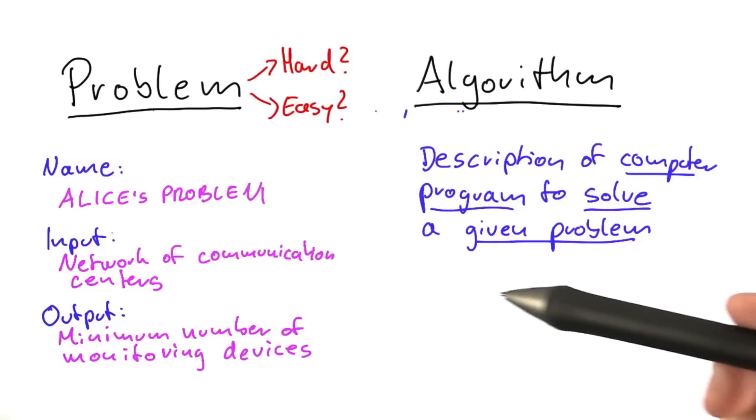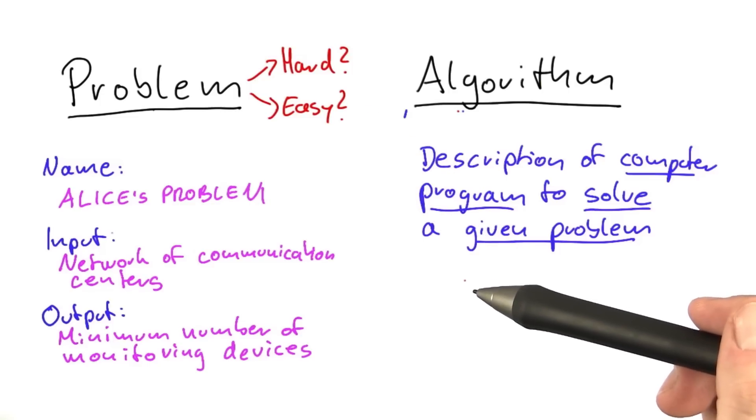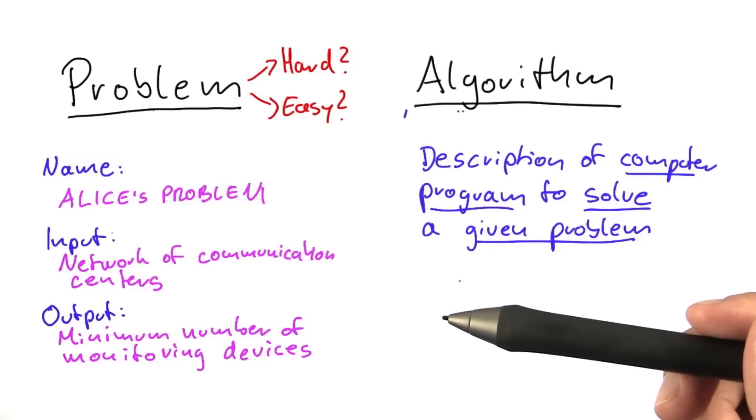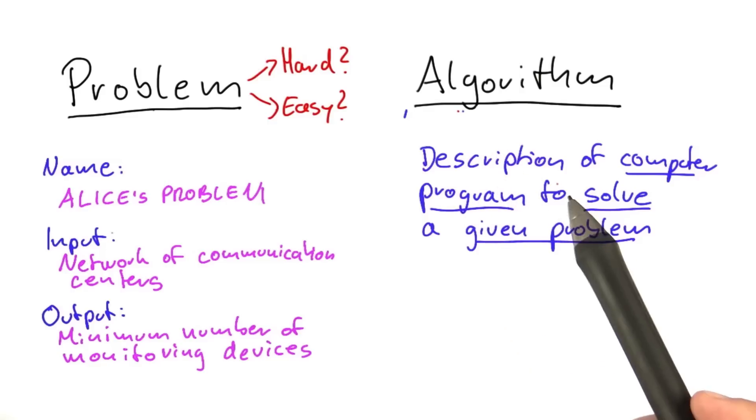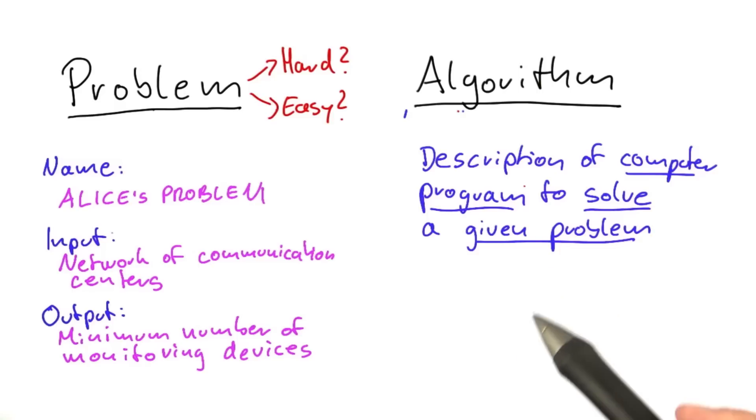The hardness of a problem tells you how fast and with how many resources you can solve the problem. But of course, that would require you to find the best possible algorithm for that problem. And best is not a very scientific term, so we'll have to say a little bit more about the analysis of algorithms.